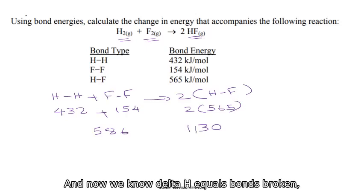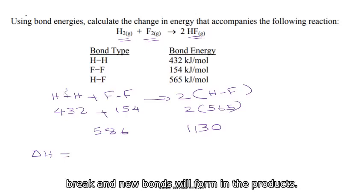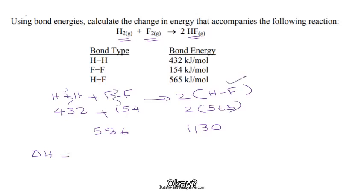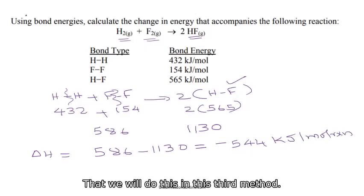And now we know delta H equals bonds broken, as I said, that is for the reactants. So the reactants bond will break and new bonds will form in the products. So 586 minus 1130. That's going to be minus 544 kilojoules per mole reaction. That's how we will do this in this third method.